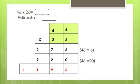Do the multiplication in expanded written method. First you have to multiply 46 by 6. Then multiply 46 by 20. 46 multiplied by 6 is 276. Then 46 multiplied by 20 is 920.